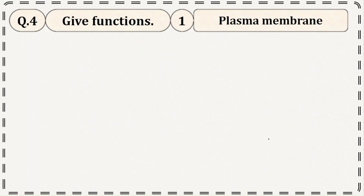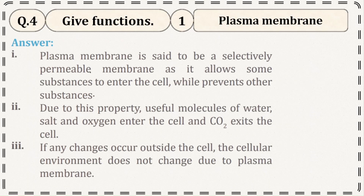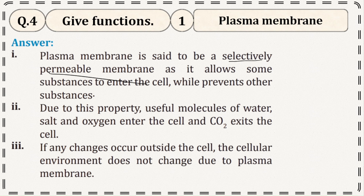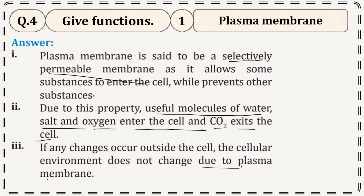Question number 4: Give the functions of plasma membrane. The plasma membrane is said to be selectively permeable as it allows certain substances to enter the cell while it prevents others. Due to this property, useful molecules like water, salts, and oxygen enter the cell, and CO2 exits. CO2 is a toxic product for our body. If any changes occur outside the cell, the cellular environment does not change due to the plasma membrane.